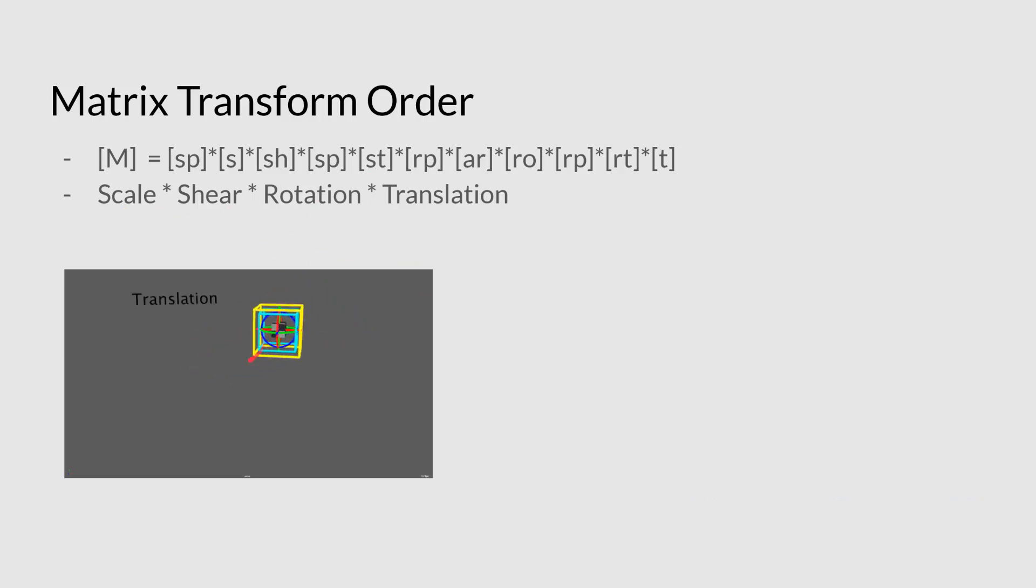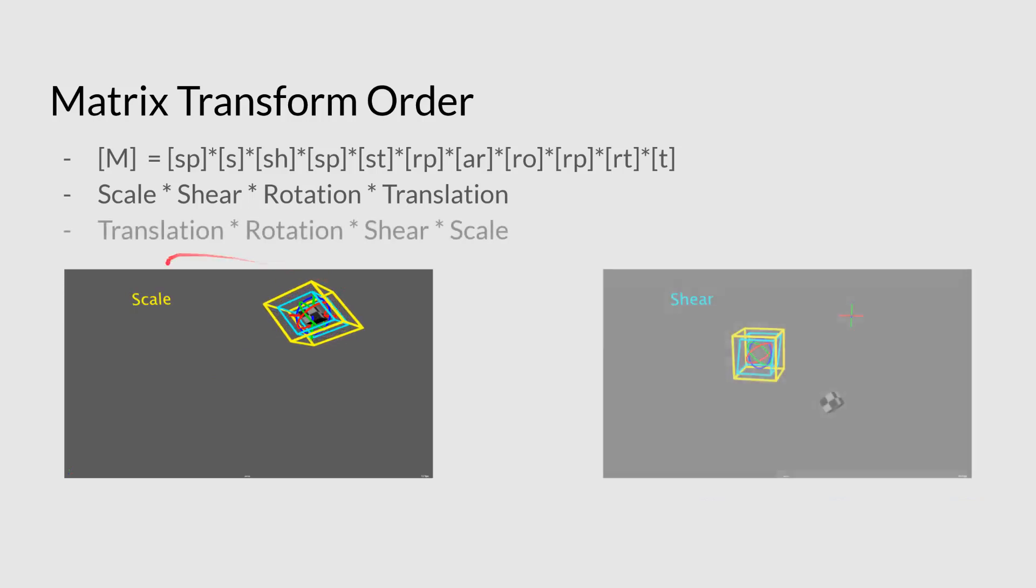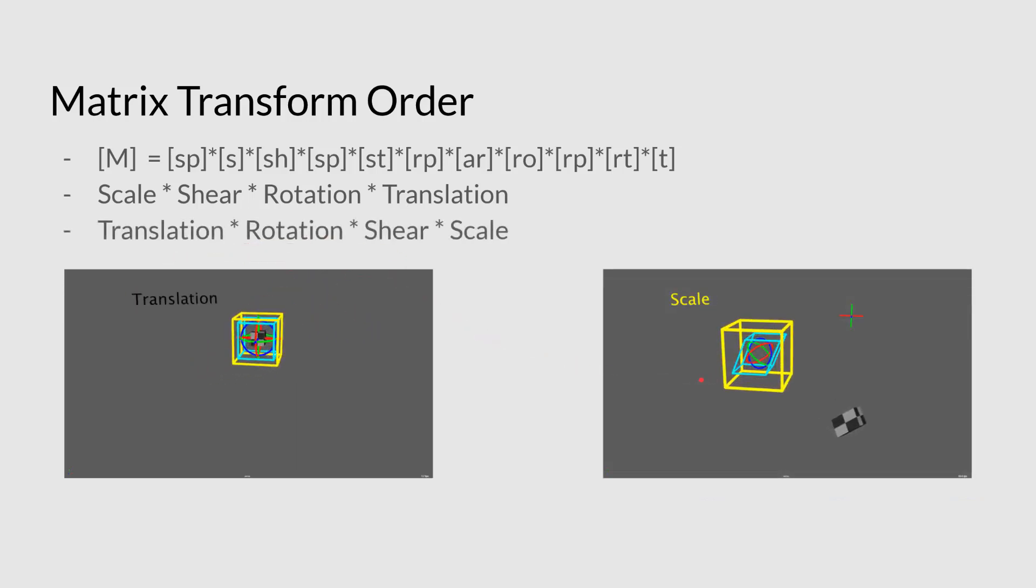Well, if we do it the other way around, the translation will move them away, will move away first, and then all the others will still happen at the origin. And therefore, we get the weird rotation around, because it's rotating around the origin, and it will be shearing around the origin, and it will be scaling from the origin, which is why the whole shape is scaling out as well.